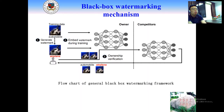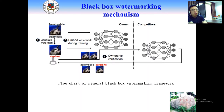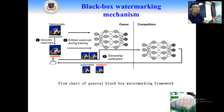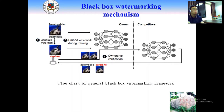In the case of verification, we just use one sample from the trigger set and input it to invoke the model. The user can verify the neural network's deliberate behavior. The users can verify ownership because the trigger set contains special behaviors and special features that are learned by the neural network.